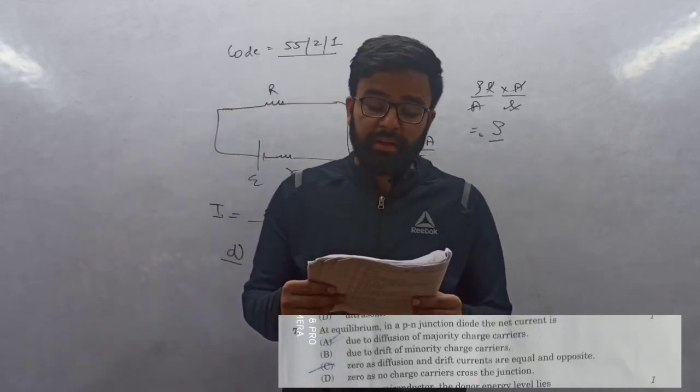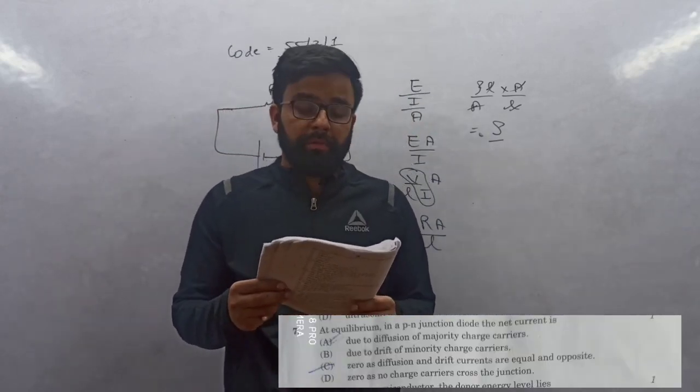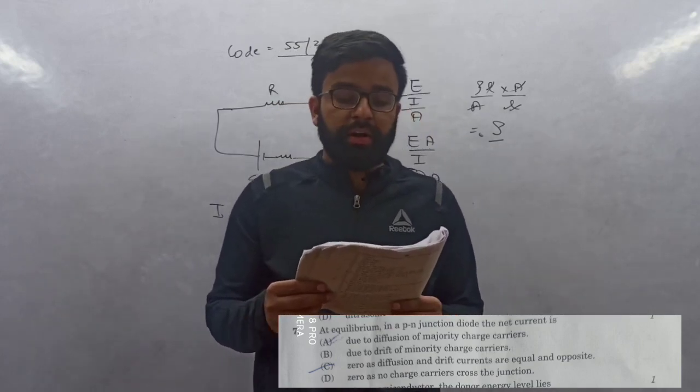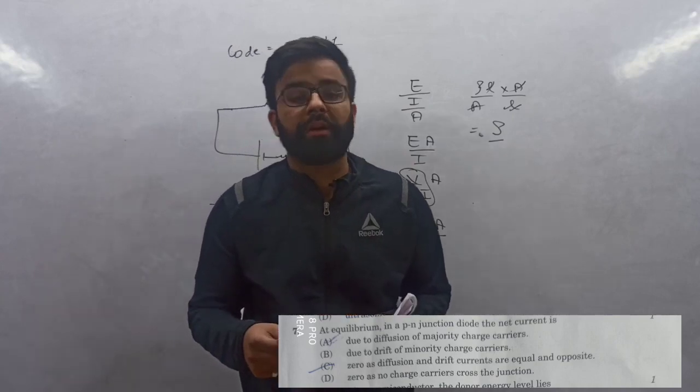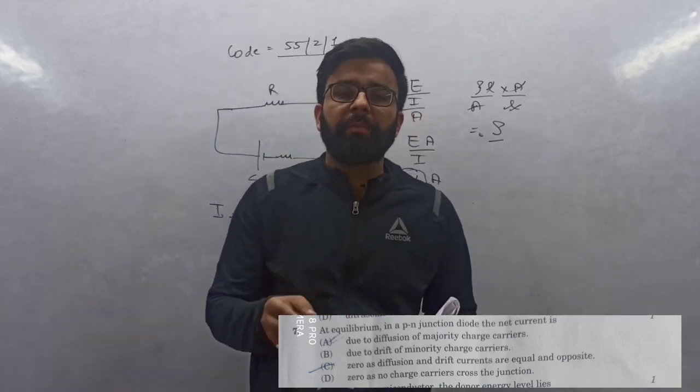Question 7: At equilibrium, what is equilibrium? Equilibrium means net current is zero. Net current zero means diffusion and drift current are equal and opposite. In a PN junction diode at equilibrium, diffusion and drift current are equal and opposite, hence net current equals zero.